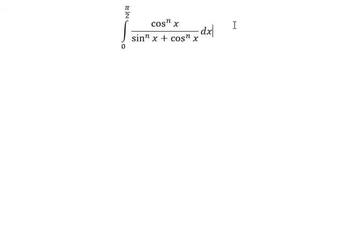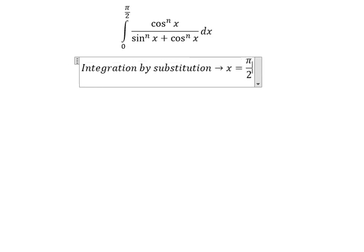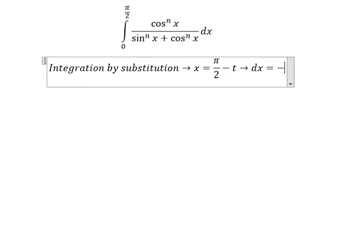So now I will show you the technique how to answer the question. We need to use integration by substitution. We put x equal to π/2 minus t. So we got dx equal to negative dt.